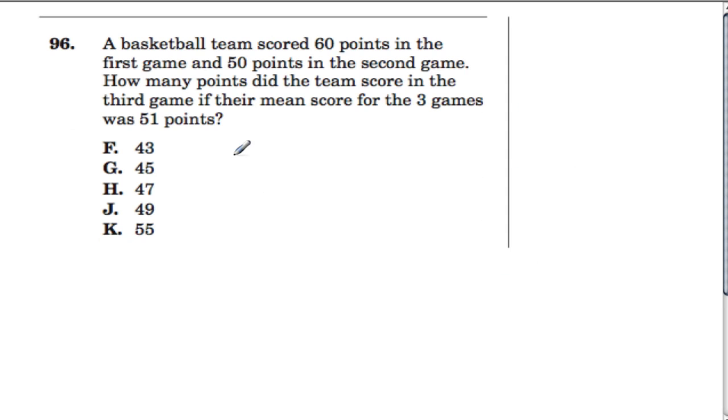And the next problem, we have an average, and they know that they scored 60 points in the first game and 50 points in the second game. What did they score in the third game to get an average of 51? So I add these three scores up, divide it by 3, and get 51.